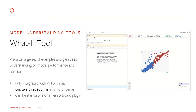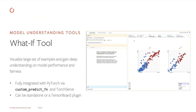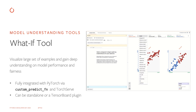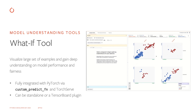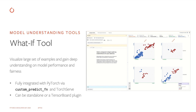The What-If tool allows us to visualize a large set of examples and bucketize them by either feature value or model prediction value, to help gain deep understanding into model performance or fairness across different segments. It is fully integrated with PyTorch via the custom predict function and TorchServe, and can be viewed both as a standalone app or as a TensorBoard plugin.